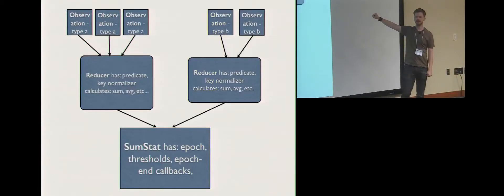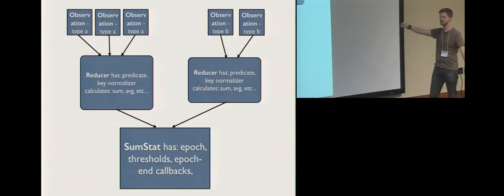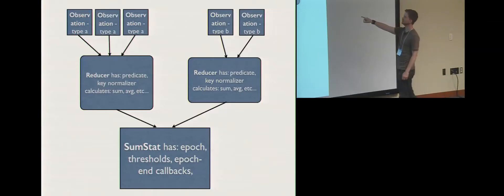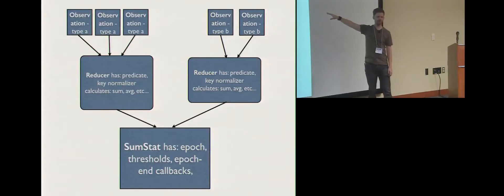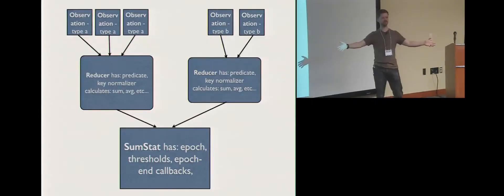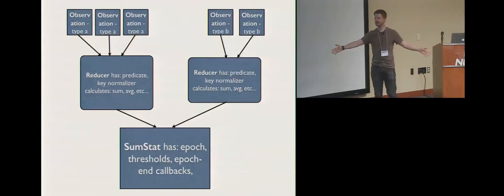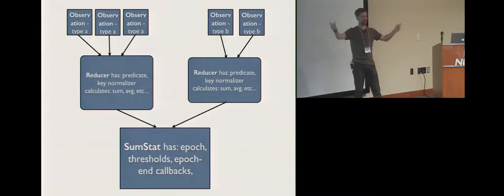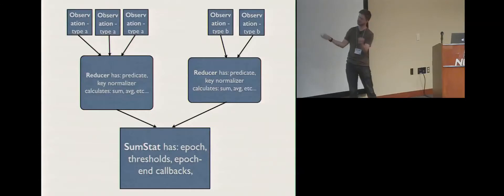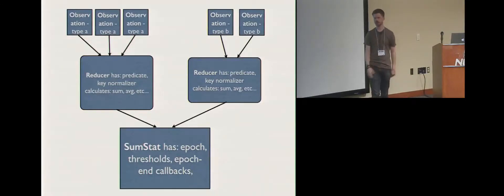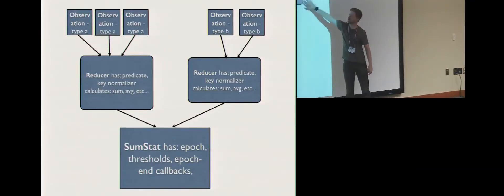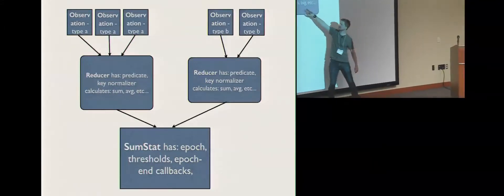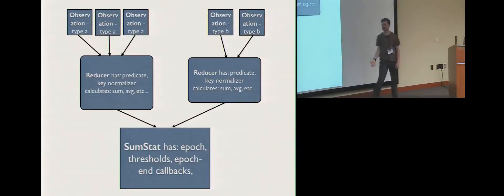The observations feed into things called reducers. There's a paper being published at RAID — it's essentially a modified MapReduce. Load balancing your traffic is mapping, distributing the computation. Then we have reducers where the reduction happens. SumStats can take multiple reducers to do more stuff. In the MapReduce, all these observations come in and they're calculating the sum, the average, the Top K, all of this different stuff. This is Bro process one, this is Bro process two — and this is where the merging of those data structures comes in.